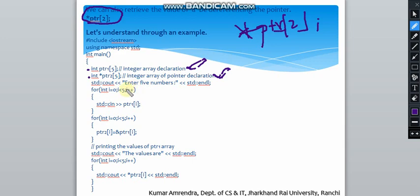First of all, we are getting numbers from the user. We are asking the user to give five numbers and accepting those numbers.